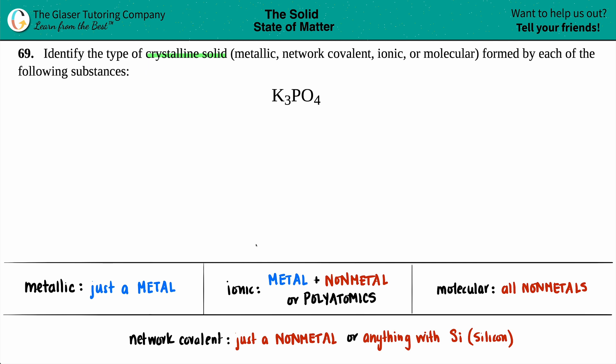Let's go from left to right and figure out which one would be the crystalline solid for K3PO4. Would it be a metallic crystalline solid? Well, the word metal is in metallic, and to be a metallic crystalline solid you just have to see a single metal, no non-metals. But I do see that I have K, and on the periodic table K (potassium) is in group one and that's a metal. And now you have P and oxygen - phosphorus and oxygen, these are your non-metals.